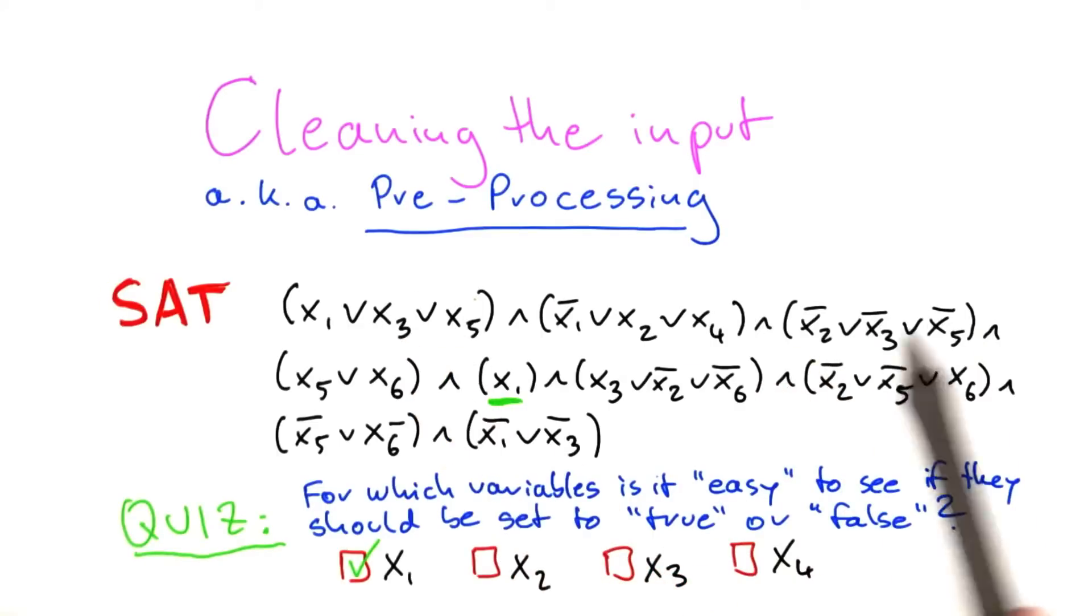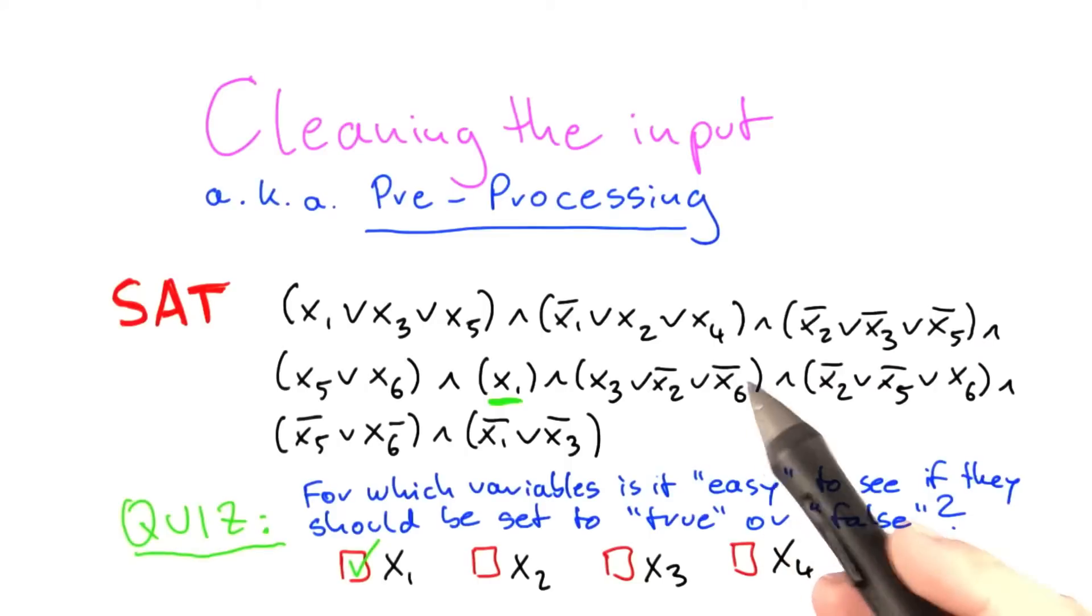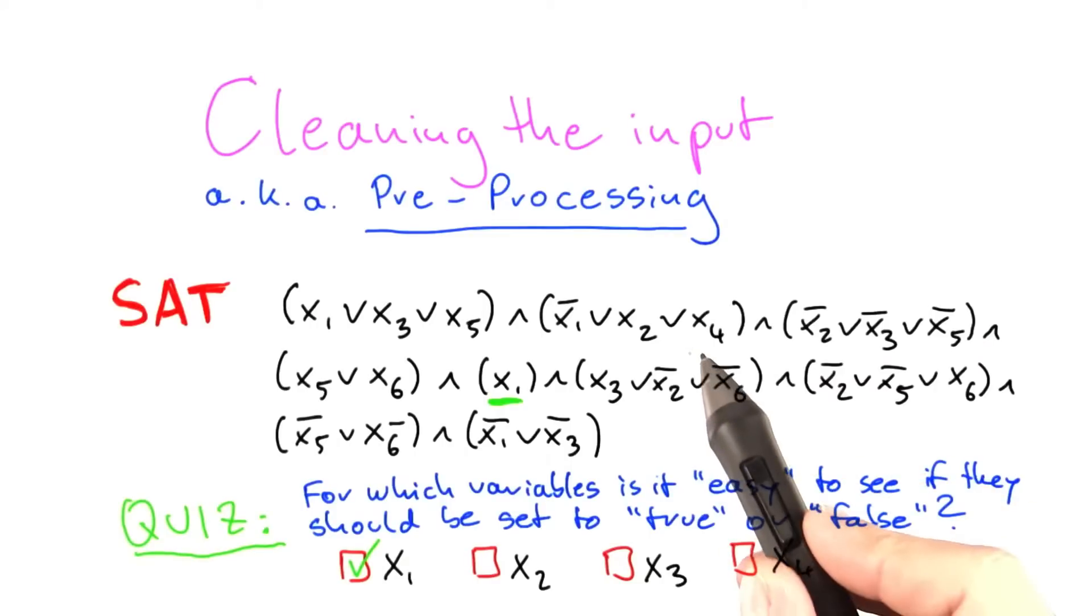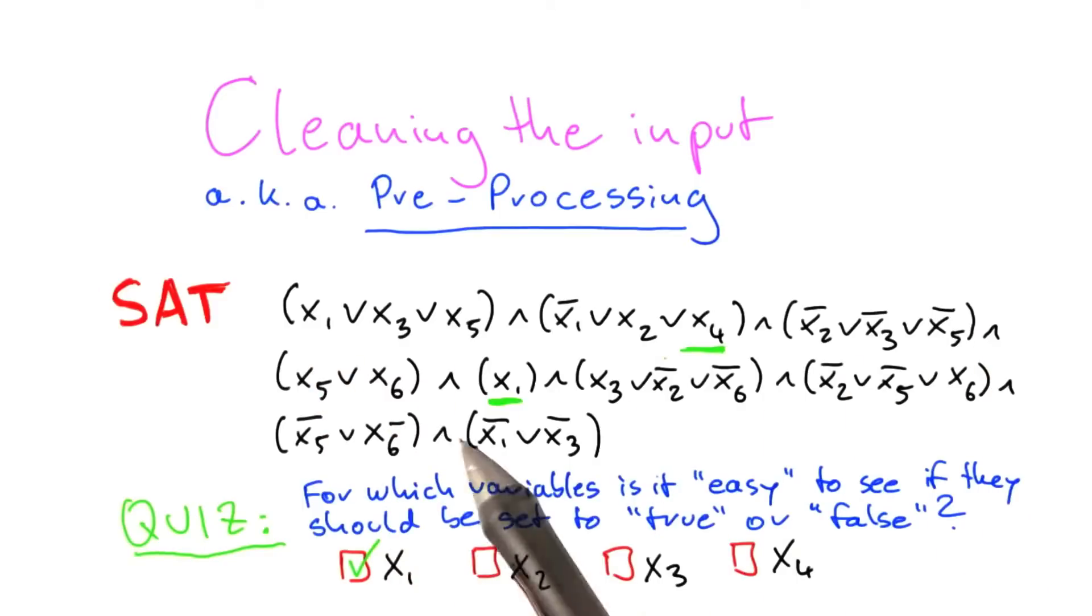So here we have x3, here we have not x3, here again we have x3, not x3. That's also not easy to see. So what about x4? Well, the thing with x4 is this variable appears only once, namely here. There's no x4 anywhere else. And that is why, in my opinion, it's very easy to see what to do with x4.